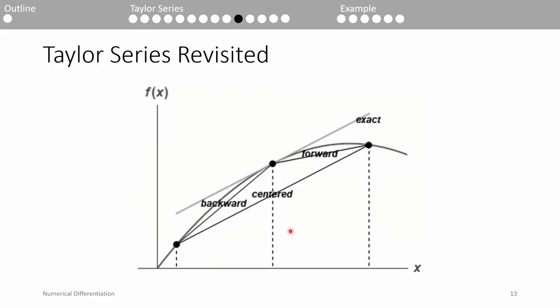A picture is worth a thousand words and this one is no exception. It can be hard to interpret the three differentiation schemes just from looking at the formulas, but this plot summarizes it nicely. Let's say our point of interest is the middle data point. To estimate dy/dx using the forward difference, we draw a line joining the middle data point and the rightmost data point — the slope of this line is our derivative estimate. To estimate dy/dx using the backward difference, we draw a line joining the middle point and the leftmost point. And for the central difference, we draw a line joining the right and the leftmost points. Note that we actually skip over the central point entirely, which is reflected in the central difference formula.